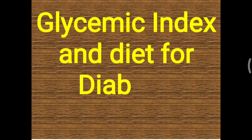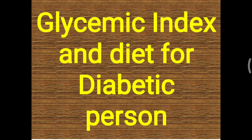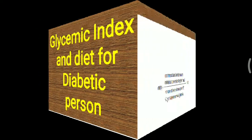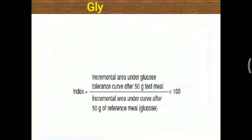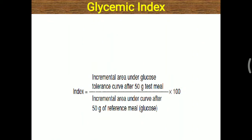Today's topic is about glycemic index and diet for the diabetic person. So in detail, we will first look at glycemic index. What is glycemic index? It is an index which is the incremental area under the glucose tolerance curve after 50 grams of a test meal.